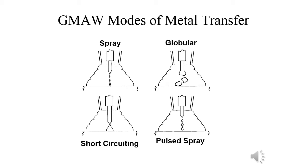Spray and pulse spray transfer characteristics: spray is achieved at higher welding currents and voltages with argon or helium-based shielding gases. You can't get spray with 100% CO2 — you need over 80% argon. If you're using a 75-25 mix (75% argon, 25% CO2), you can get to globular but not to spray. This high heat input, deep penetrating weld limits applications to the flat position. With spray you can get really high deposition rates and put down a lot of weld metal. Pulsing the current allows for better control and out-of-position welding — overhead, uphill, or downhill.